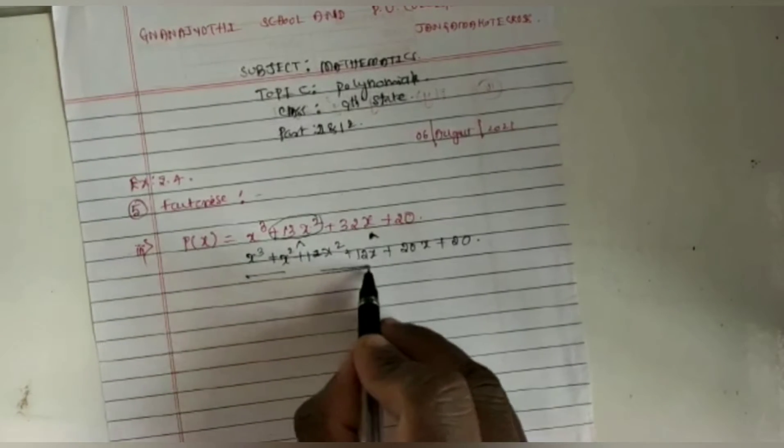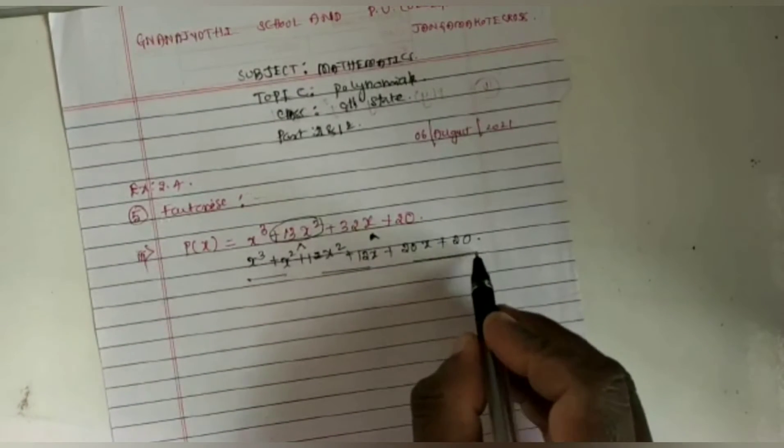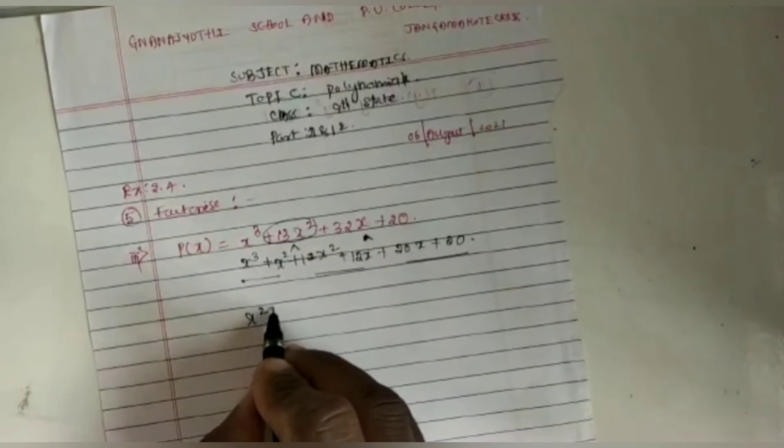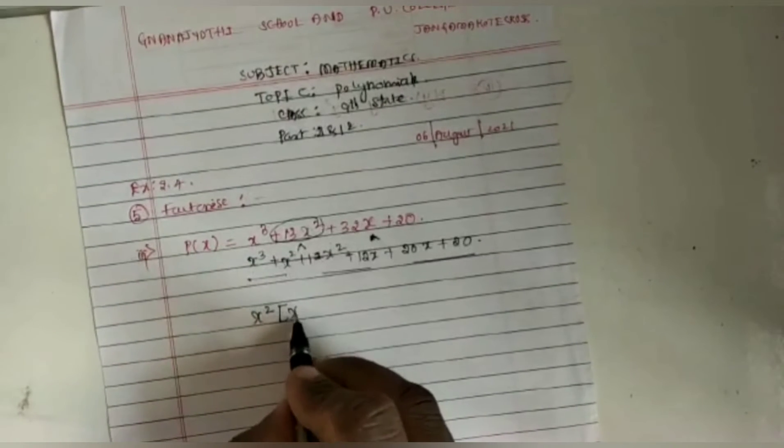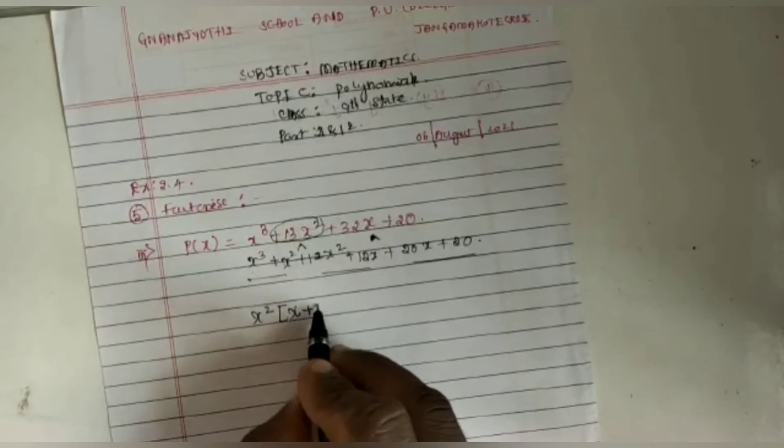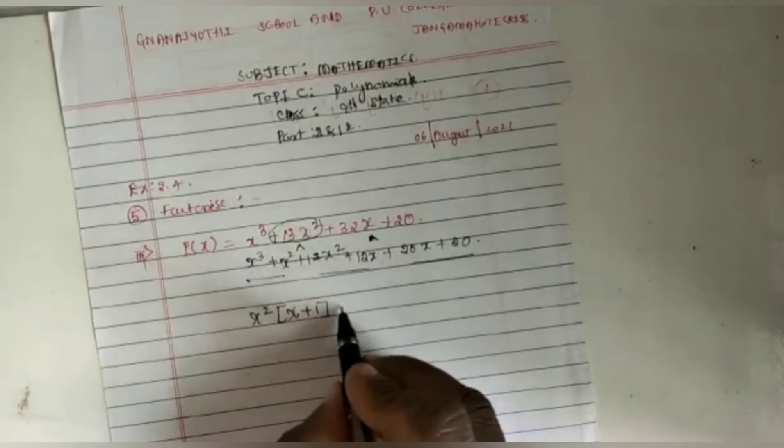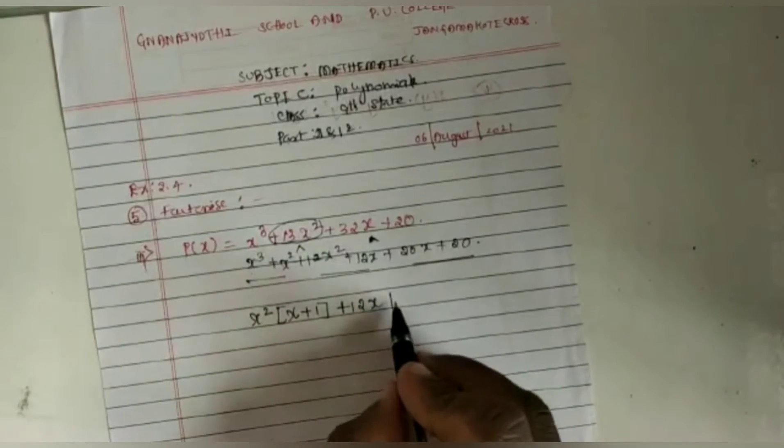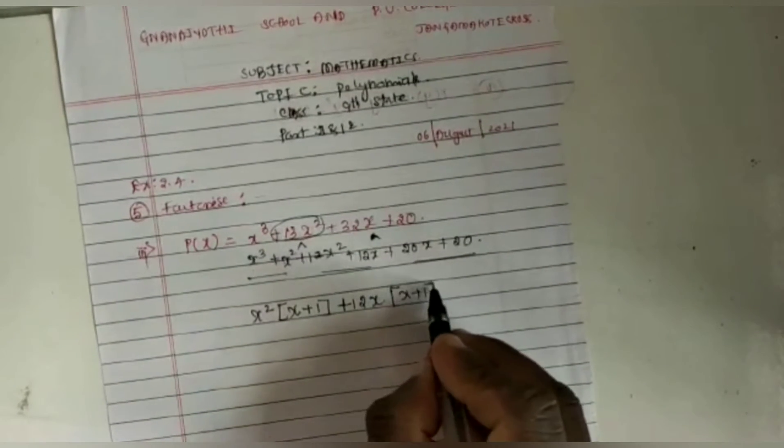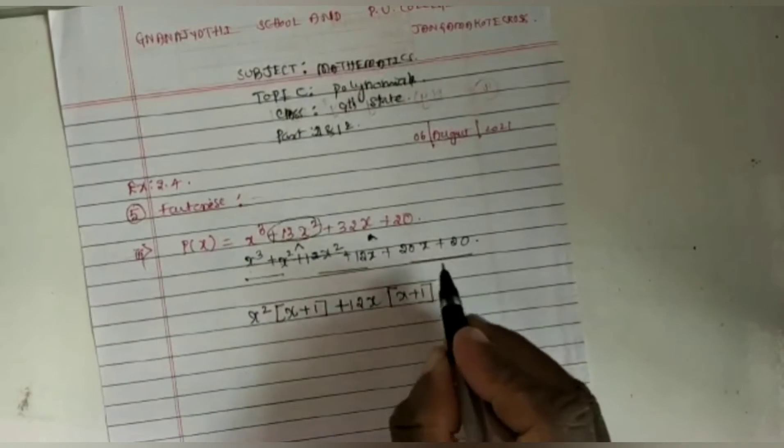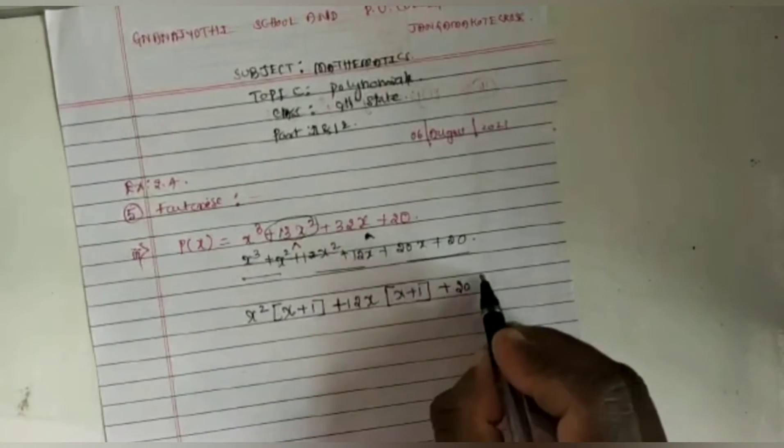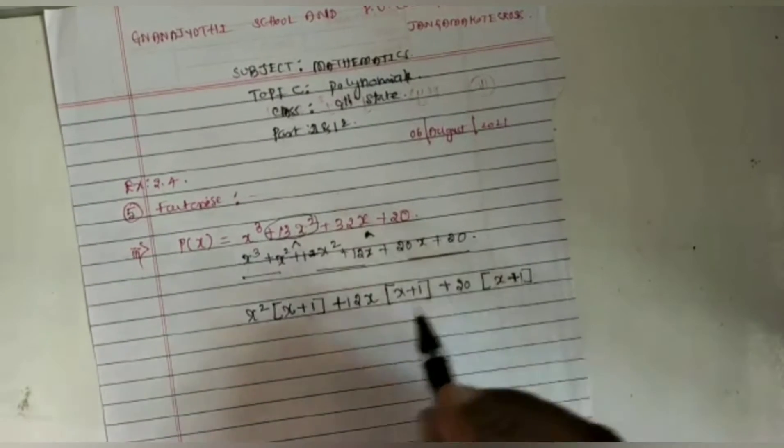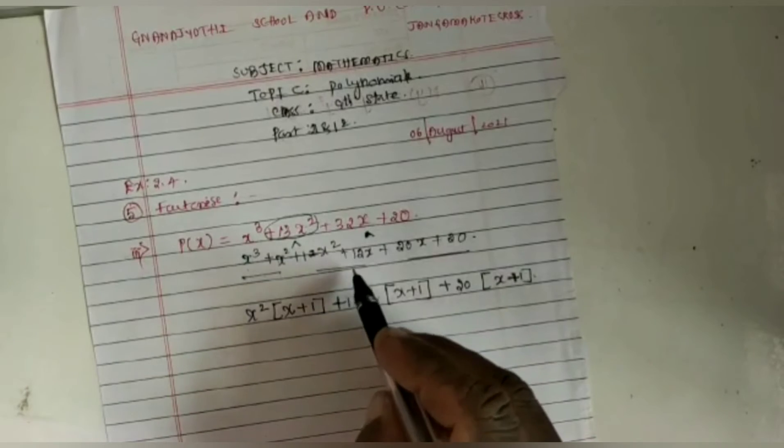This is the first group, second group, and third group. In the first group, we take x² as common, then remaining we have x + 1. In the second group, we take 12x as common, remaining is x + 1. In the third group, we take 20 as common, remaining is x + 1. Therefore, after factorizing,